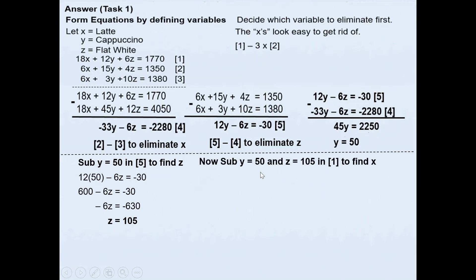Now we will substitute y value of 50 and z value of 105 in equation 1 to find the x value. So 18x plus 12 times 50 plus 6 times 105 equals 1770. That simplifies to 600 plus 630, which becomes 1230. Take 1230 on the other side gives you 18x equals 540. Divided by 18 on both sides gives you x value of 30.